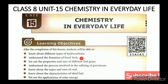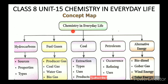Additional objectives: know about characteristics of ideal fuels and list out the applications of solar energy. This lesson covers 8 topics. The concept map for Chemistry in Everyday Life begins with the first topic: hydrocarbons. Hydrocarbons' sources are fossil fuels, formed from plants and animals over 300 million years.